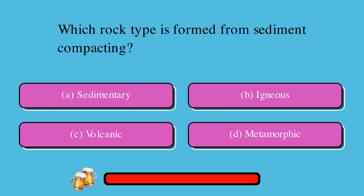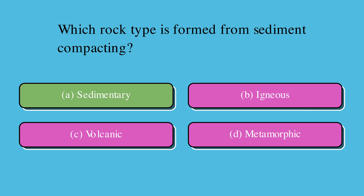Which rock type is formed from sediment compacting? A. Sedimentary, or B. Igneous, or C. Volcanic, or D. Metamorphic? The correct answer is A. Sedimentary.